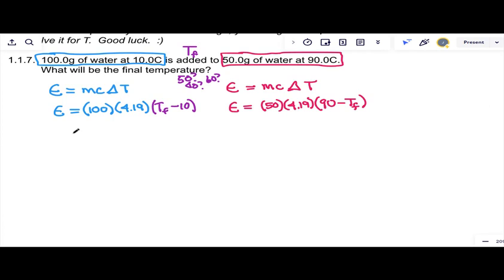Now, I said these two energy amounts have to be equal, and indeed they are, so we can write 100 times 4.19 times T final minus 10 equals, because they're the same amount, 50 times 4.19 times 90 minus T final. And our job is solve for T final.